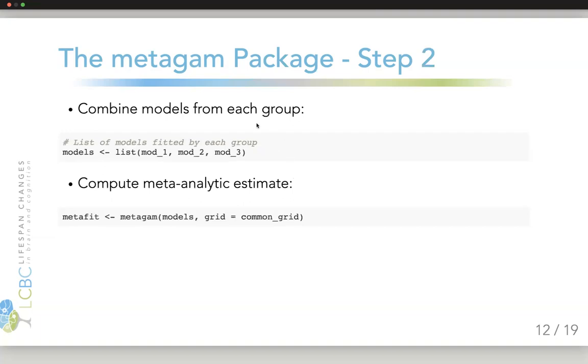In the next step, we combine the models from each group, and first we need to make a list of those models. Let's say we have three groups that have fitted the model on their data, then we create this list. And the next thing we do is actually to compute the meta-analytic estimate. Then we just do metagon on the models, and we have the common grid again, which is the predictor values where we want to look at the meta-analytic estimates.